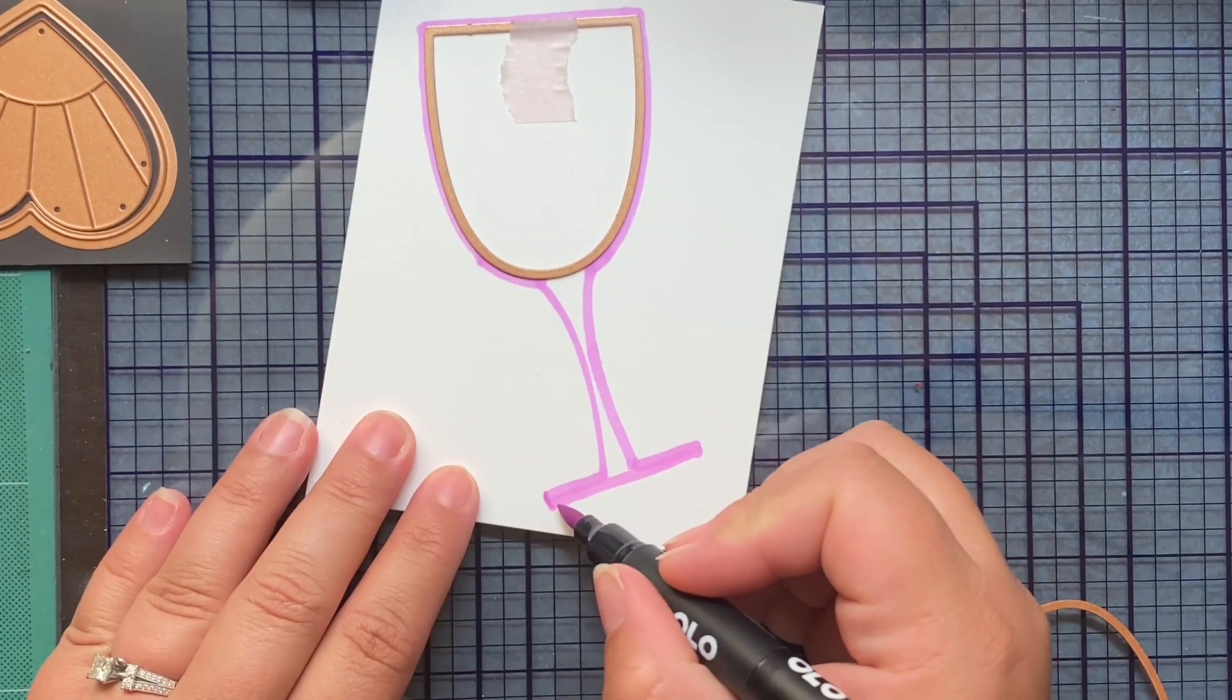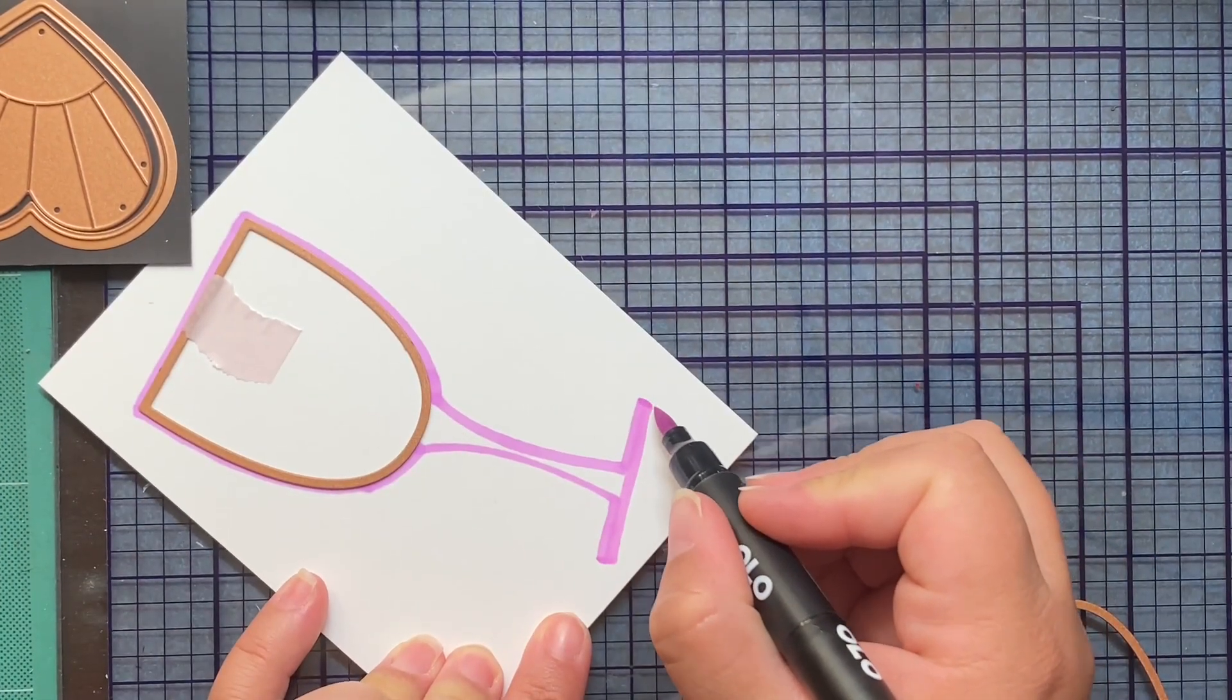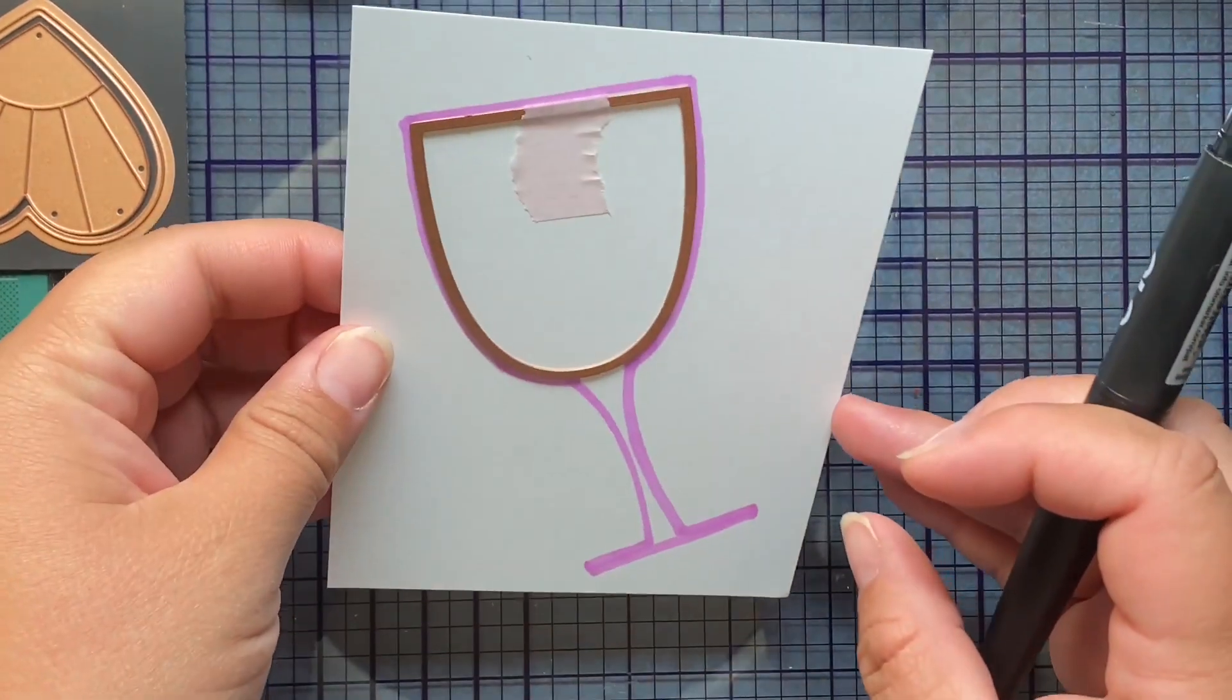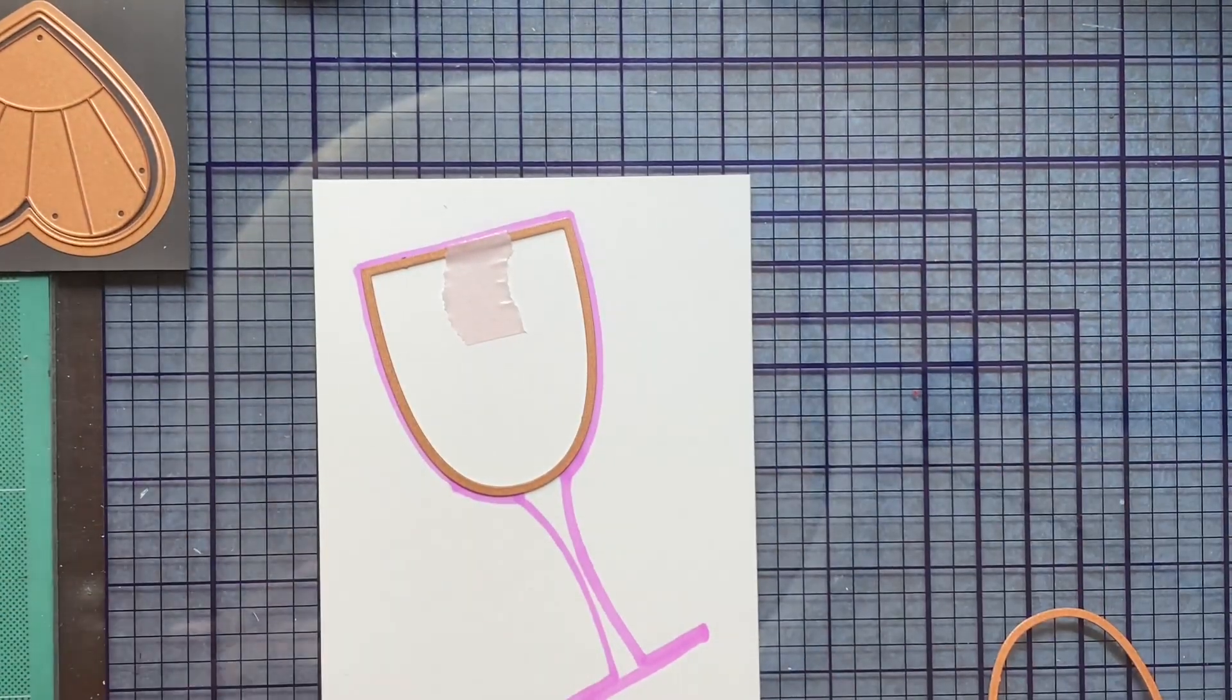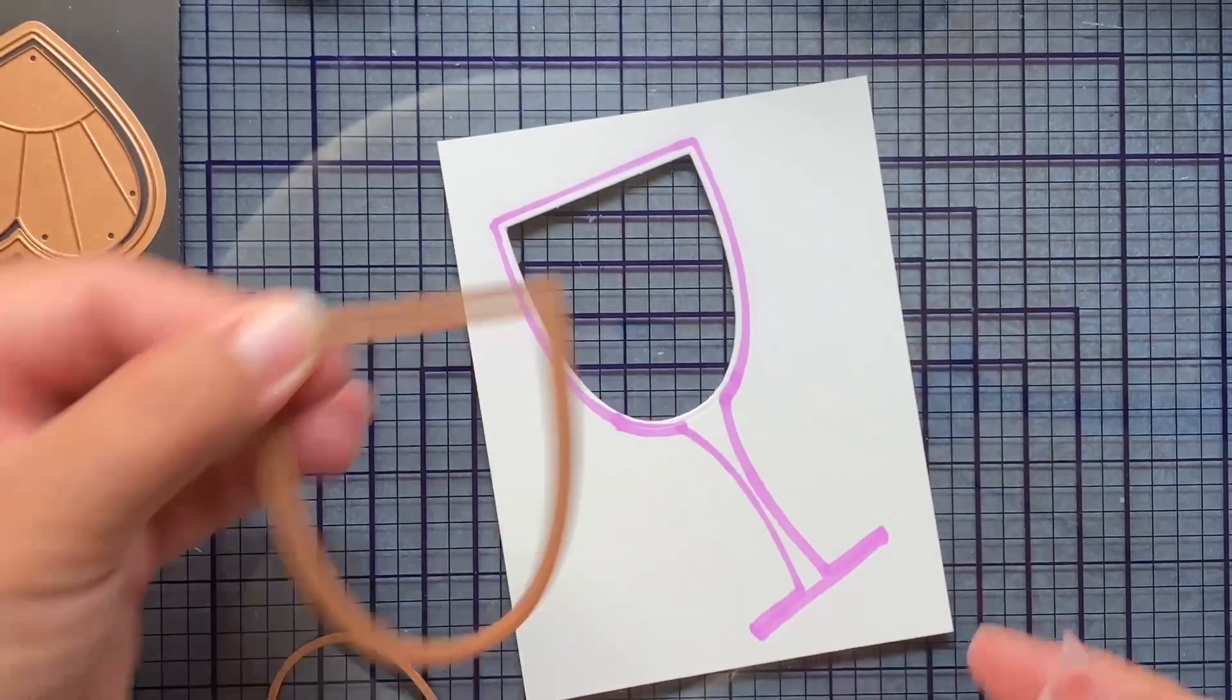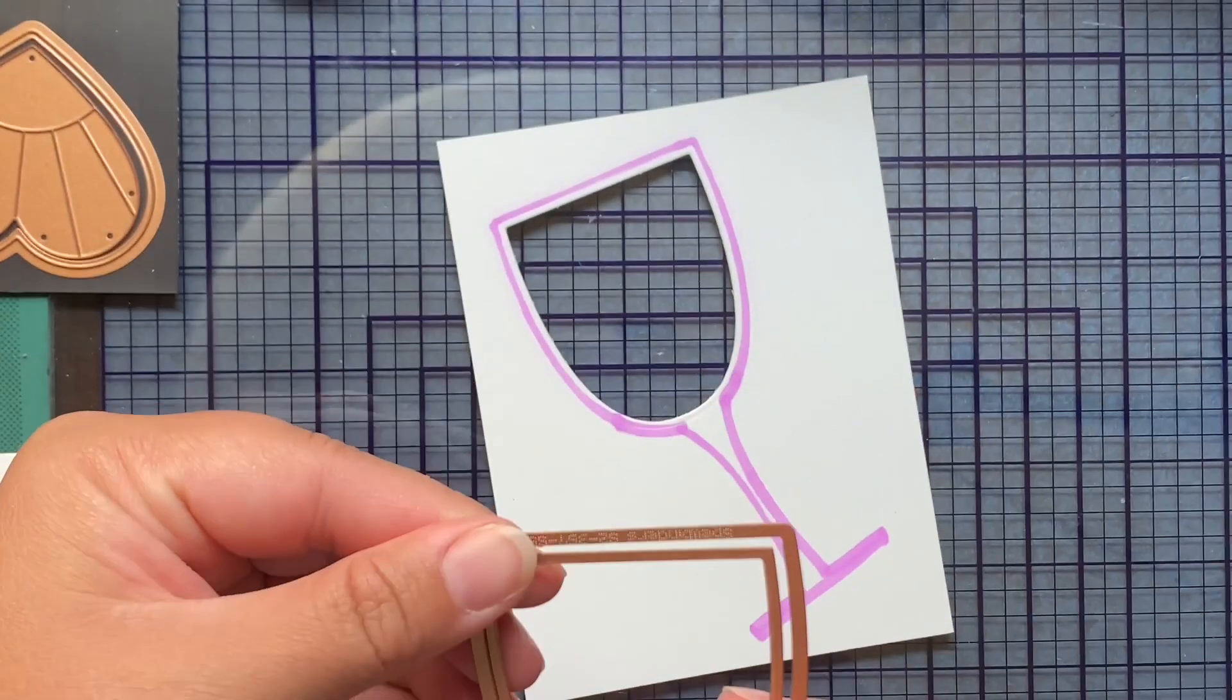And there is the base of my wine glass, totally just free-handed, essentially, with the help of that die. And yes, now that I'm looking at it, it looks a little wonky, but I ran it through the die-cut machine.